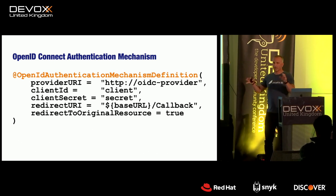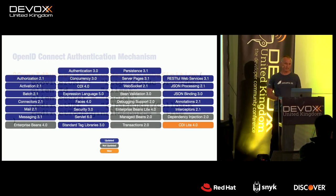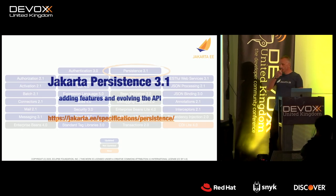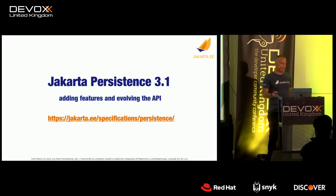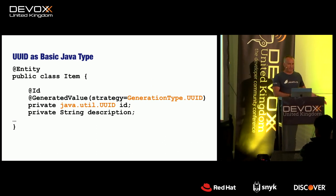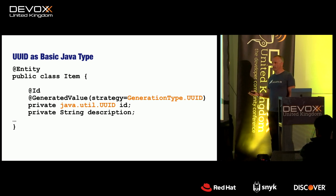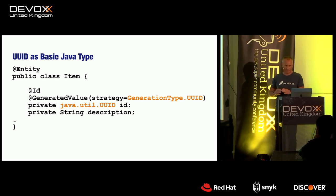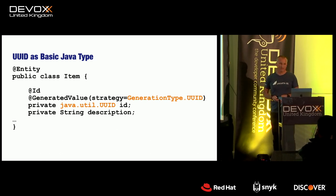Security in Jakarta EE is all about doing it within the application — no external configuration needed. For persistence, Jakarta Persistence is a minor update adding features and evolving the API. The thing the community has asked for for a long time is UUIDs as basic Java types. Now you can directly use UUIDs as primary keys without doing the mapping between UUIDs with the Java UUID class — it just generates for you automatically.